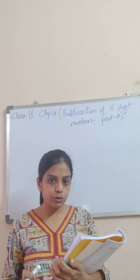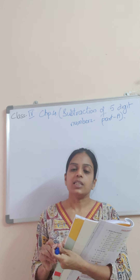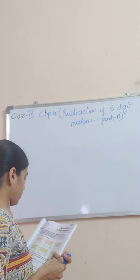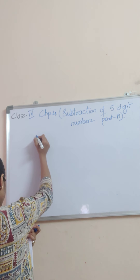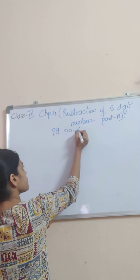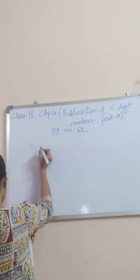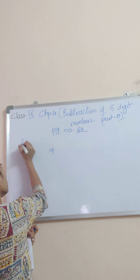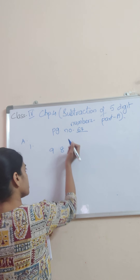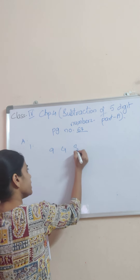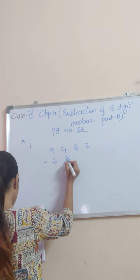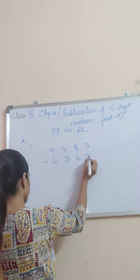So students, you know how to do subtraction, right? So let us start. Page number is 67. First one: 9, 4, 8 and 3, minus 6, 3, 6 and 2.